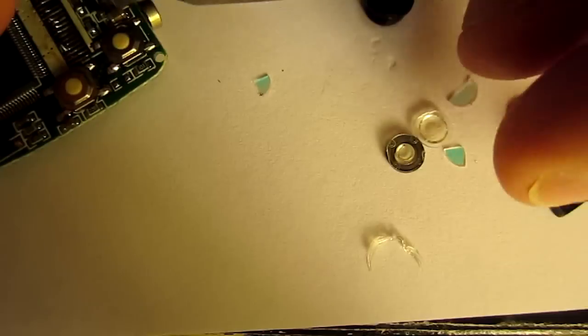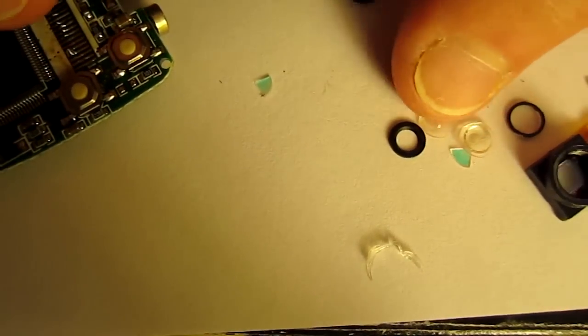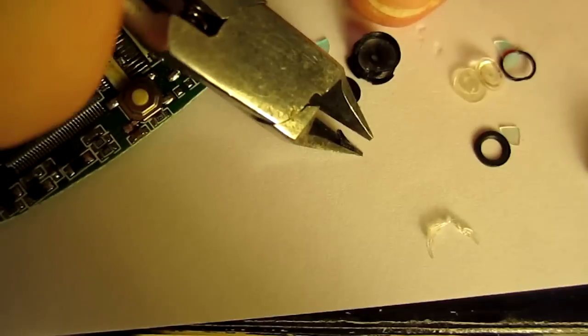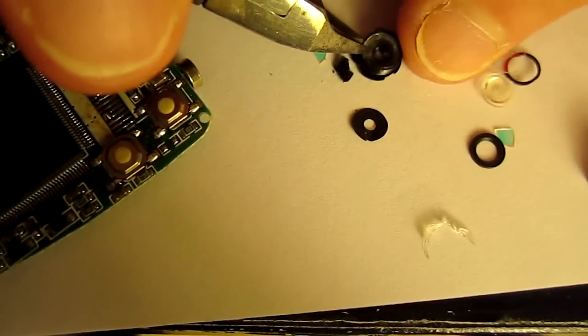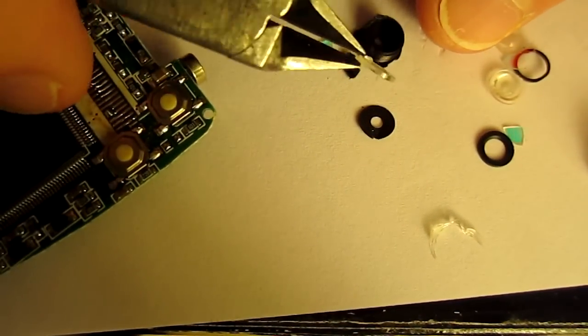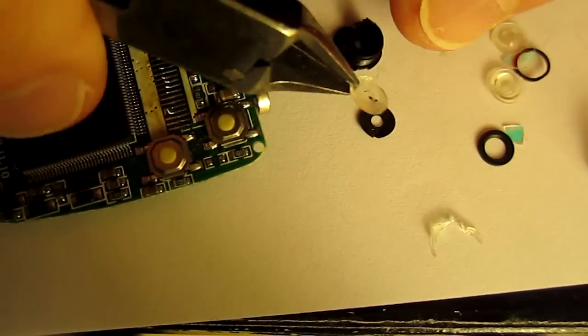Then lens number 3 just came out, that's a plastic lens and a thick spacer. Then there's a flat spacer, and lens number 2, which is a negative plastic lens.